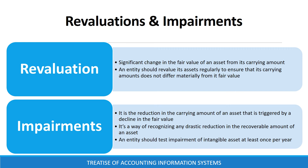Revaluation is a significant change in the fair value of an asset from its current carrying amount. An entity should revalue its assets on a regular basis to ensure that the carrying amount does not differ materially from its fair value. On the other hand, impairment is a reduction in the carrying amount of an asset that is triggered by a decline in its fair value. Impairment is a way of recognizing any drastic reduction in the recoverable amount of an asset. An entity should test impairment of an intangible asset at least once per year, and on a regular basis should test impairment of other assets.